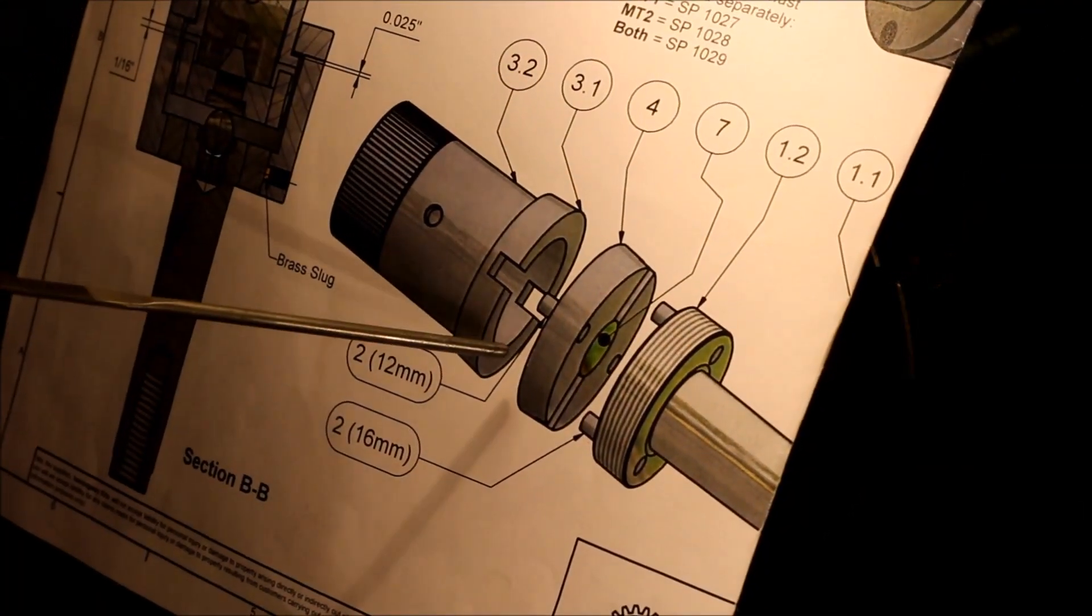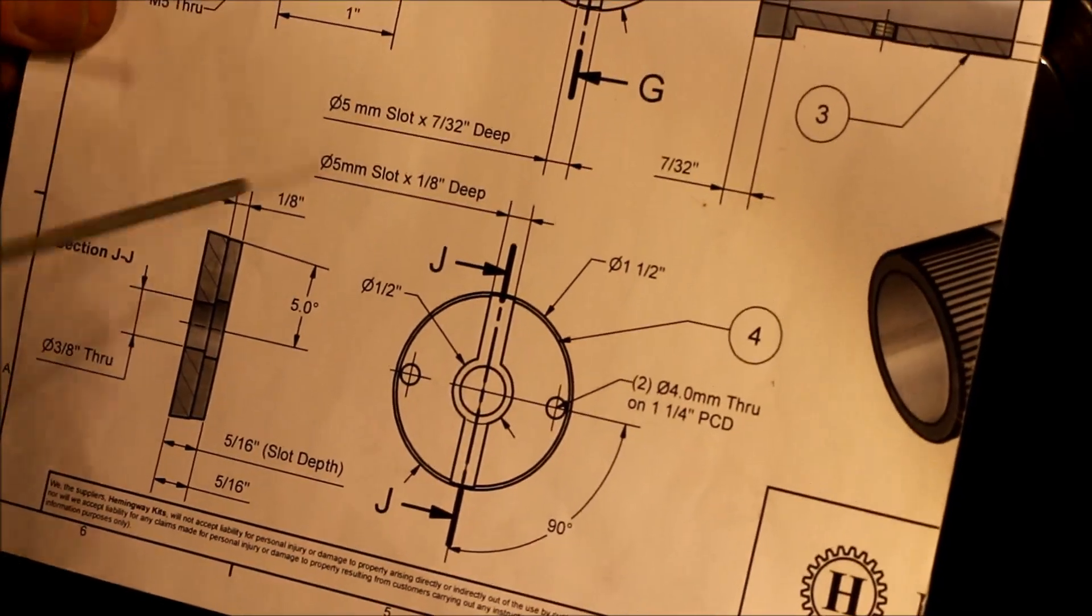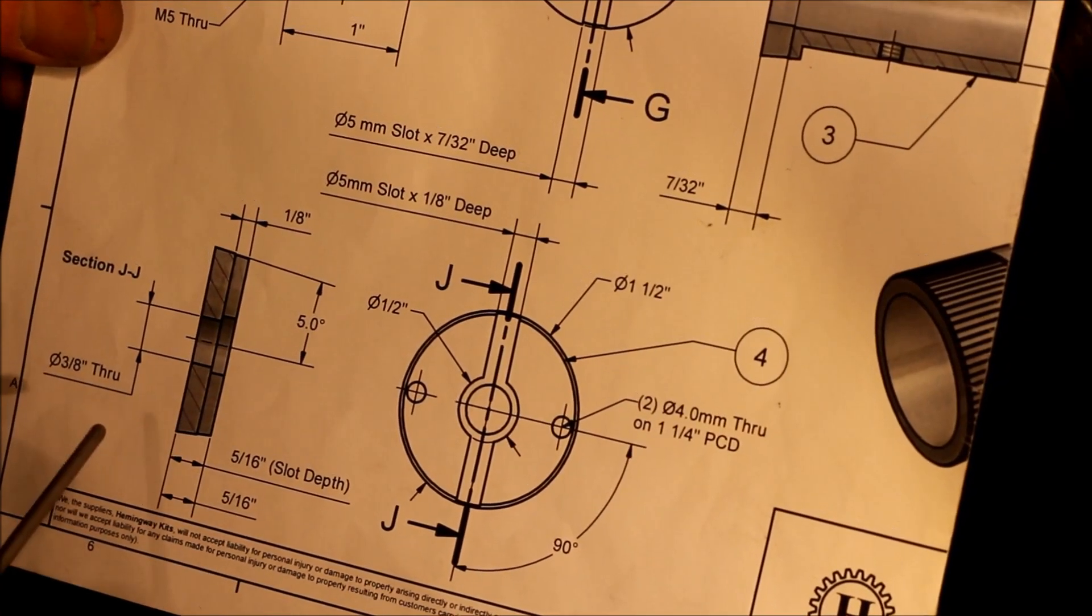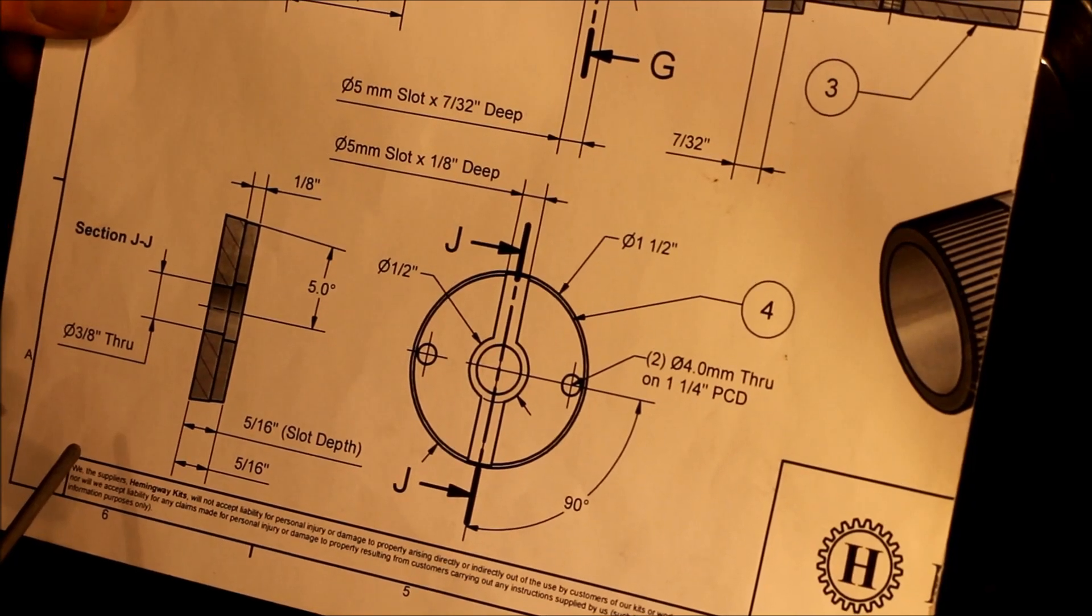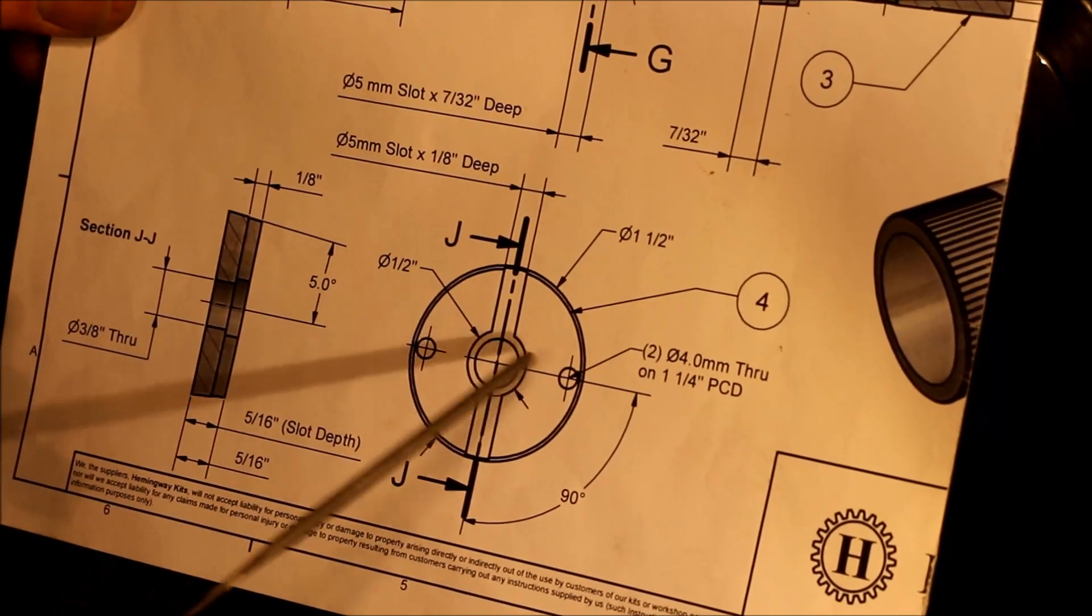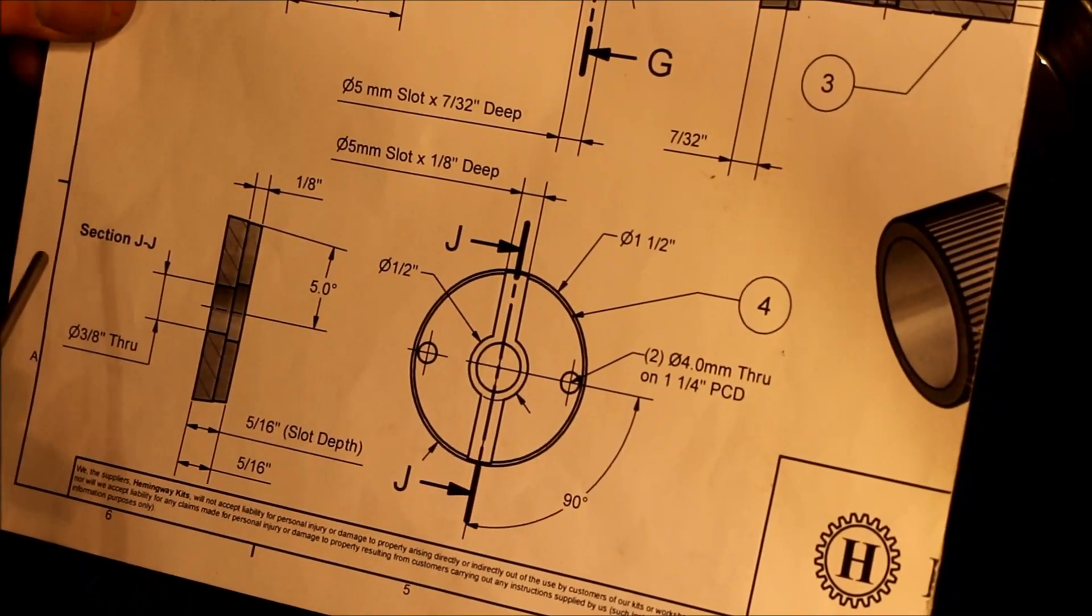Time for a pivot plate. It's just a disc parted off from a piece of round stock steel. Drill a couple of holes and mill a slot in it.